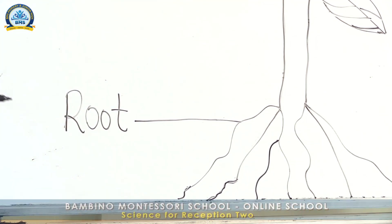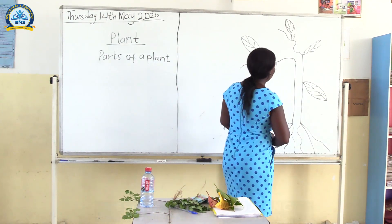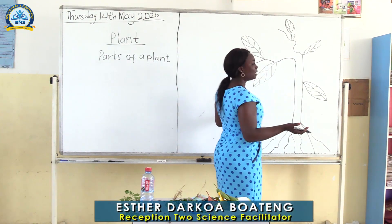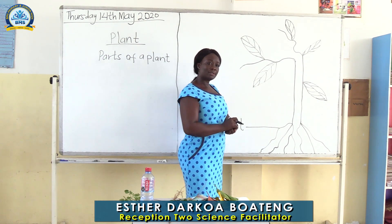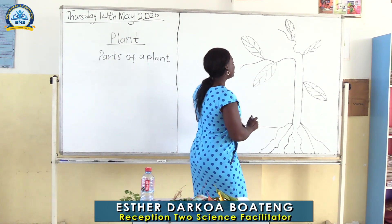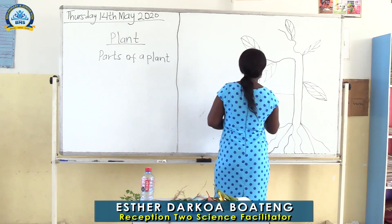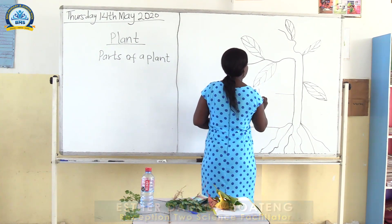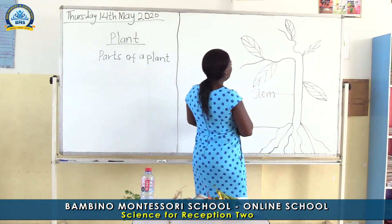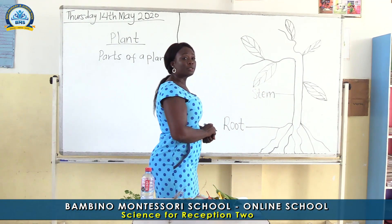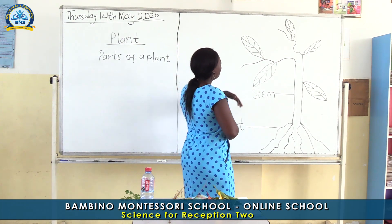You can spell roots! Let's go to the middle part of the plant. What's the name of the middle part of the plant? Yes — stem. Very good. Stem, stem, stem — the middle part of the plant is called the stem.